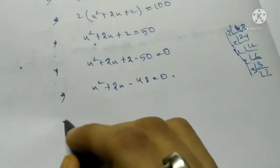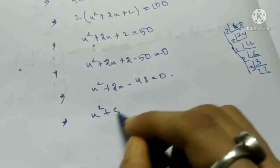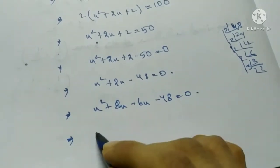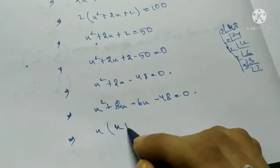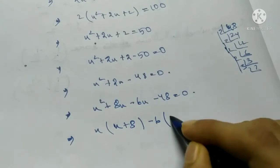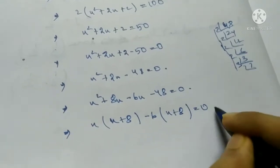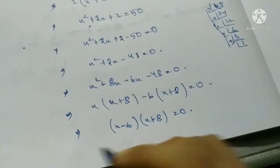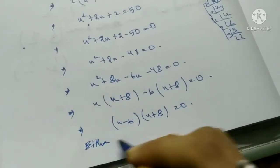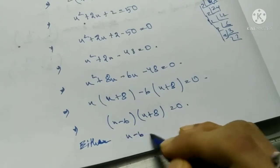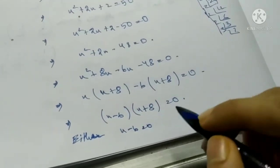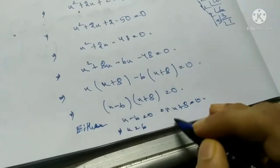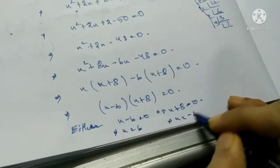Splitting the middle term: x squared plus 8x minus 6x minus 48 equals 0, so x(x plus 8) minus 6(x plus 8) equals 0, giving (x minus 6)(x plus 8) equals 0. Therefore either x minus 6 equals 0 or x plus 8 equals 0, so x equals 6 or x equals minus 8.